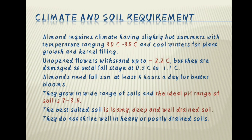Climate and soil requirement. Almond requires a climate having slightly hot summers with a temperature ranging 30°C to 35°C and cold winters for plant growth and kernel filling. Unopened flowers withstand up to minus 2.2°C but they are damaged at petal fall stage at 0.5°C to minus 1.1°C. Almonds need full sun at least 6 hours a day for better blooms. They grow in a wide range of soils and the ideal pH range of soil is 7 to 8.5. The best suited soil is loamy, deep and well-drained. They do not thrive well in heavy or poorly drained soils.